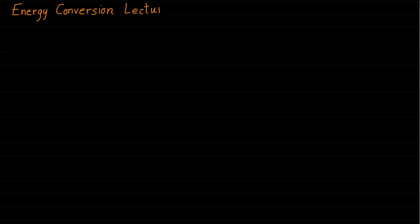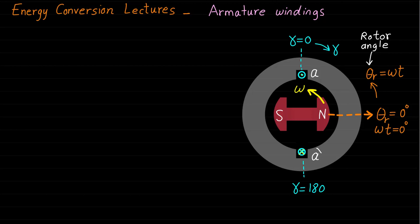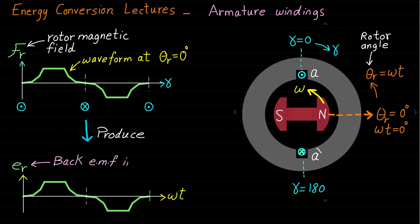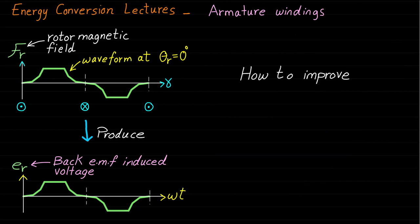Welcome back to the energy conversion lectures. In a previous lecture, we provided some details about the armature concentrated windings. One of the important points we mentioned is that the salient pole synchronous machine with concentrated winding can have trapezoidal rotor magnetic field distribution and trapezoidal back EMF-induced voltage if we do not design the rotor properly. Therefore, in this lecture, we will continue our discussion about this point and try to learn how to improve the trapezoidal rotor magnetic field distribution and the back EMF-induced voltage waveform when we have a salient pole synchronous machine with concentrated armature windings.